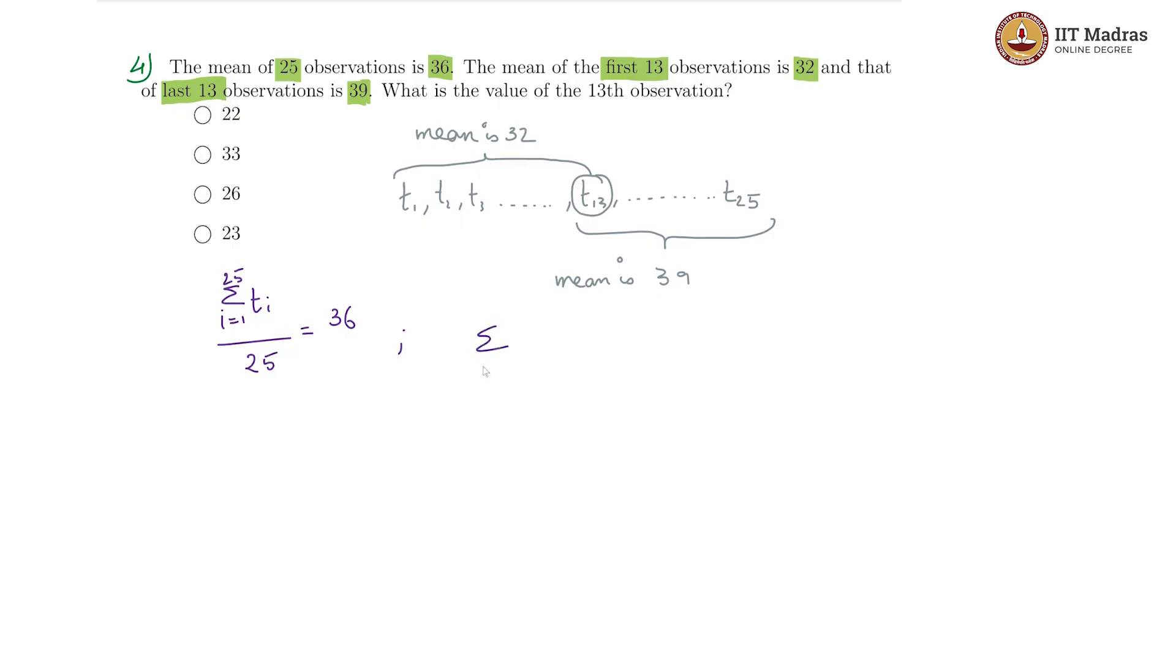We also know that sigma t i, where i goes from 1 to 13 divided by 13 is equal to 32. In case you are confused about what this sigma i going from something to something, let us call this m to n t i means...